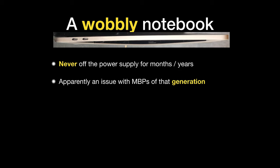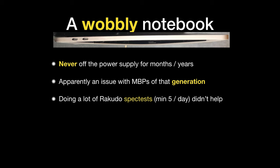So how did this all get started? About two months ago my notebook started to be wobbly. I guess it had been never off the power supply for months and years — basically ever since COVID and we stopped traveling. As you can see from the side view, it got like twice as thick as it used to be. Apparently that is an issue with MacBook Pros of that generation: if you leave them on the power supply too long the batteries start to blow up. I was doing a lot of RAKUDO spec tests on that machine — minimum five spec tests a day — for a better part of the past two and a half years, so that didn't help because it would get very hot always.